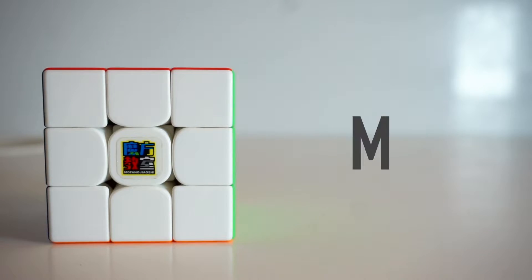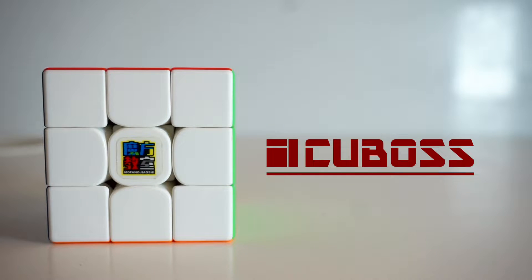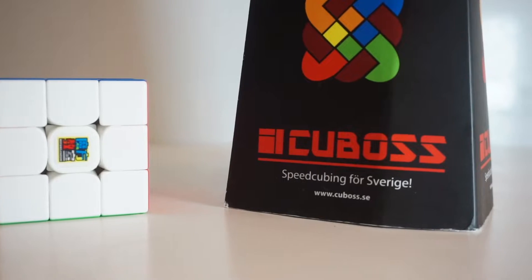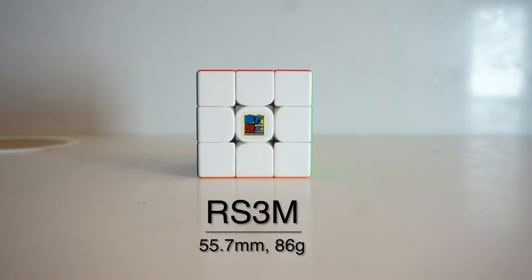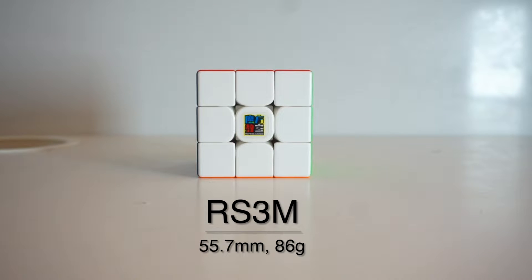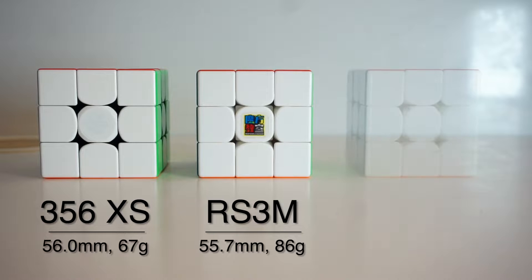Let's slow things down and cover the specs. The 2020 RS3M comes in at an insanely low $10 and can be purchased at cubos.com through the link below. You can also save 5% off using the discount code Lucas05 at checkout and also support the channel. It comes in at 55.7mm and weighs in at 86g. For comparison, the weight and size is almost exactly between the Volca Elite and the GTS3M.